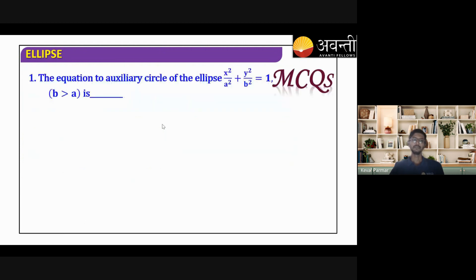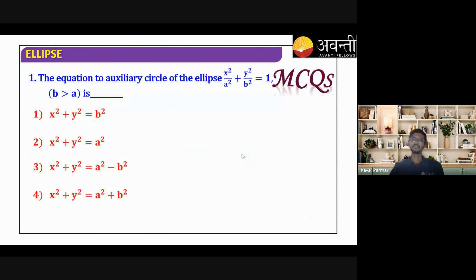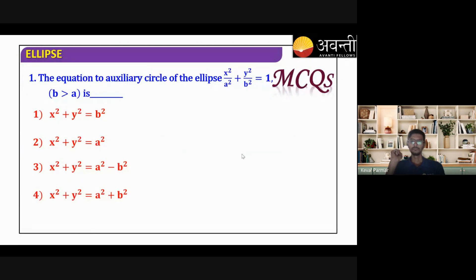Let's do an MCQ: what is the equation of the auxiliary circle for the ellipse where b > a? Remember, the auxiliary circle corresponds to the major axis. Since b > a, the major axis corresponds to b, so the answer is option one: x² + y² = b².